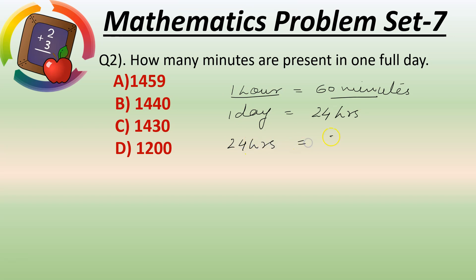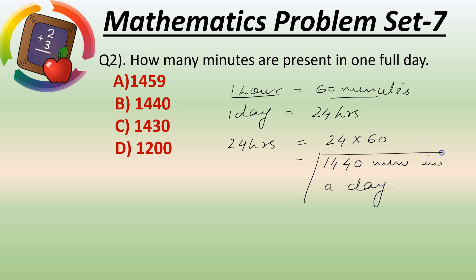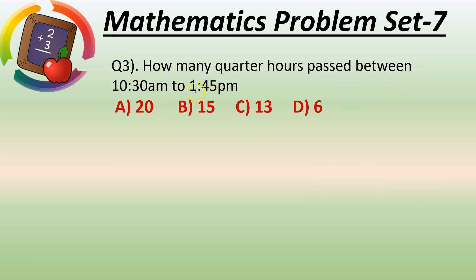In 24 hours, how many minutes? 24 into 60: 4 into 6 is 24, carry 2; 2 into 6 is 12 plus carry 2 is 14 — so 1440 minutes in one full day. Option A is 1459, Option B is 1440, Option C is 1430, Option D is 1200. Option B is the right answer.